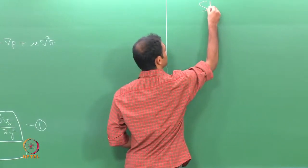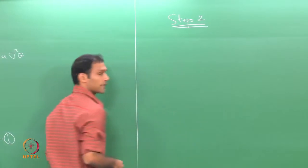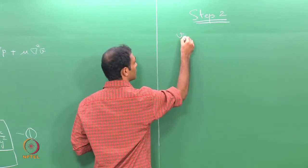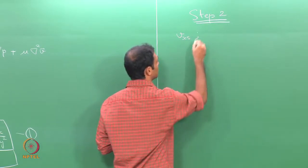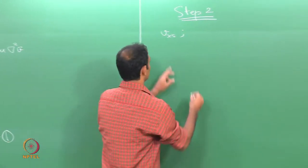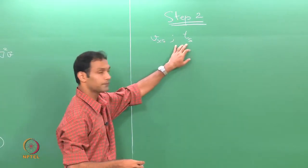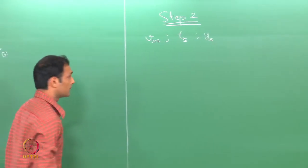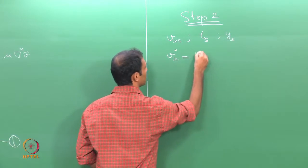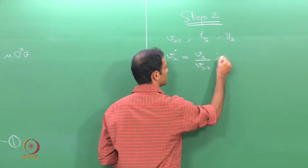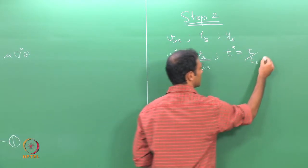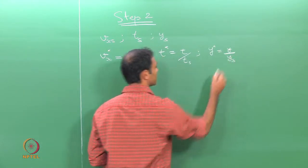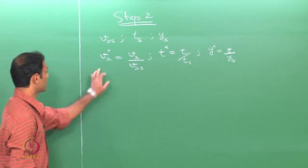Now we go to step 2, which essentially involves choosing reference scales to non-dimensionalize the problem. We choose vxs as the scale for the x direction velocity component, ts as the scale for time, and ys as the scale in the y direction. Our non-dimensional variables are: vx* = vx/vxs, t* = t/ts, and y* = y/ys.